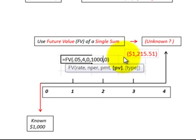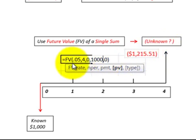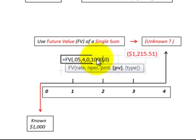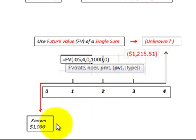Now let's look at the case where we have a known present value amount and we want to compound it forward to its future value — that's the unknown amount. Here we use the future value function in Excel, put in the interest rate in decimal form, number of periods, and payment would be zero since we're looking at one lump sum. We enter the known present value and determine the future value to be $1,215, versus the $1,000 it was worth at the beginning of year one.